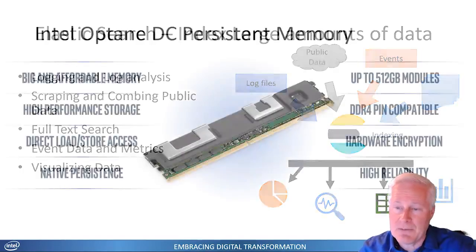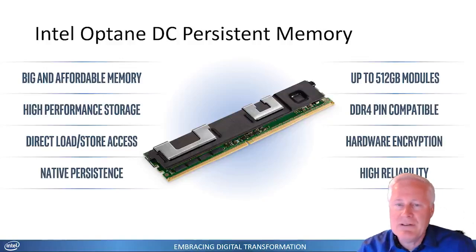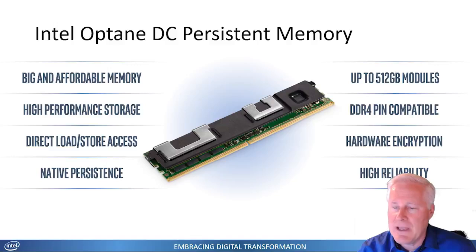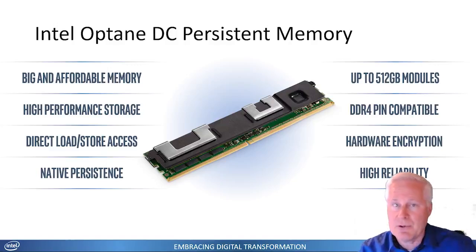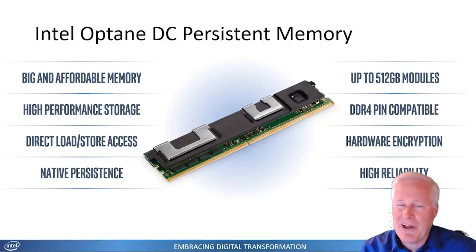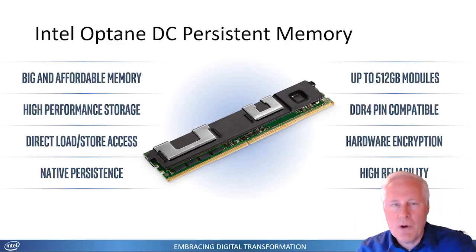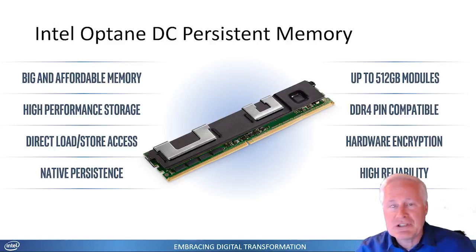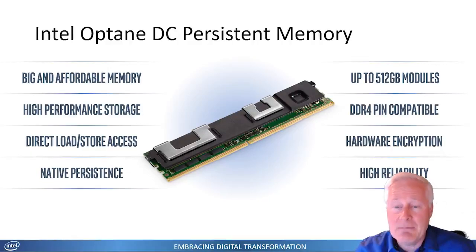Let's talk a little bit about the persistent memory first. It is a brand new technology out of Intel — pretty cool technology. It comes in DDR4 format, so it fits right in your server in a DDR4 memory slot. They're not DIMMs, they're really PEMMs — persistent memory modules. They come in 128, 256, and 512 gig modules. So in a two-socket system, I can have six terabytes of memory, and that memory is persistent.